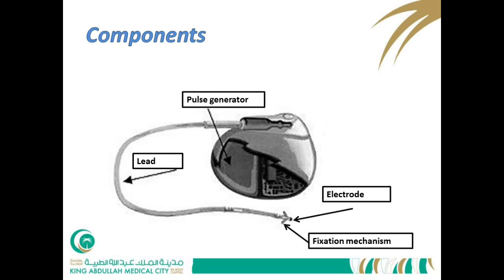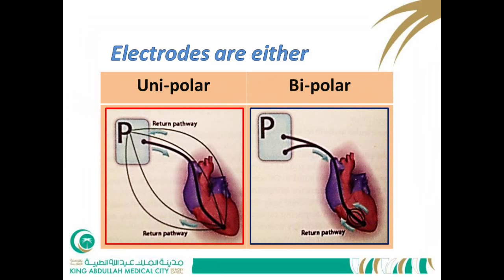The electrode has an extra fixation mechanism that prevents dislodgement from the myocardium. Electrodes are either unipolar or bipolar. In both types, the cathode is inside the myocardium. In a unipolar electrode, the anode is the casing itself. In a bipolar electrode, the anode is a nodule located just proximal in the same axis of the lead — if you see such a nodule on the lead, it is a bipolar electrode.